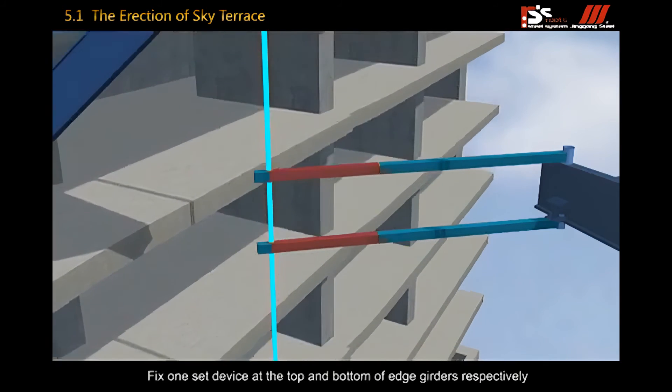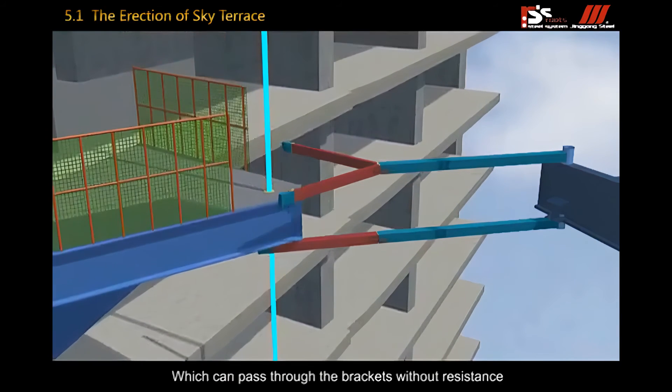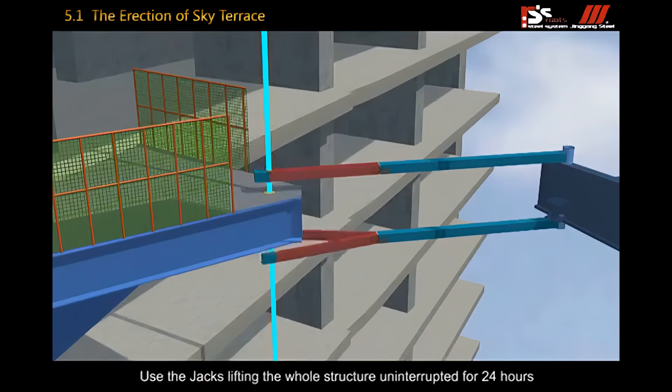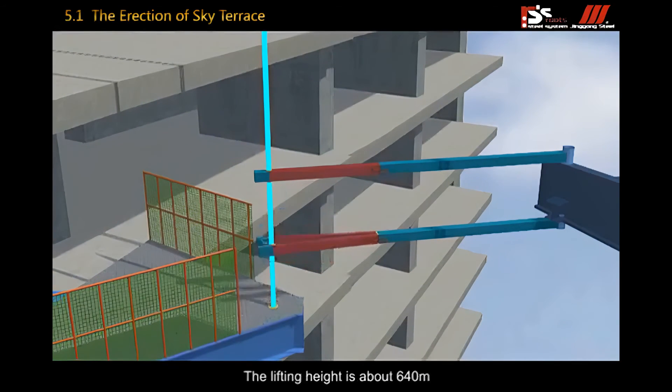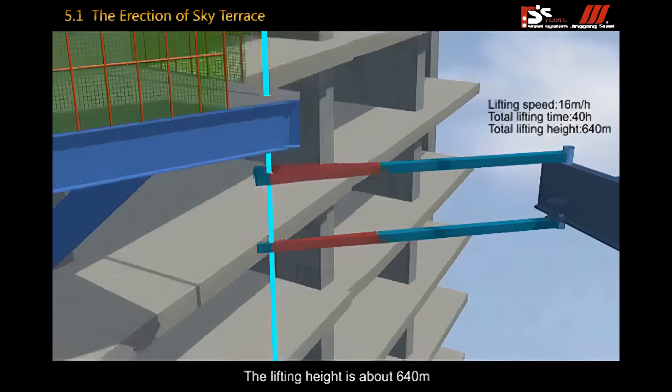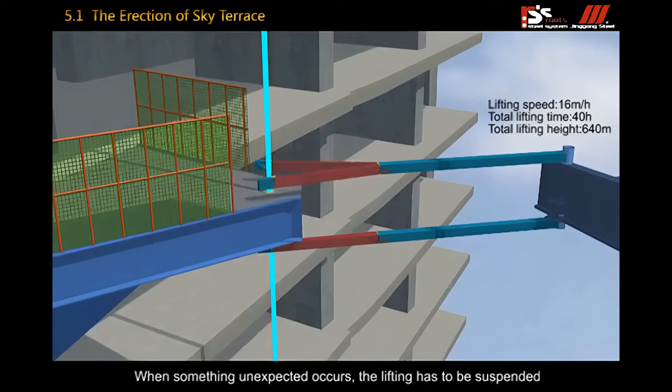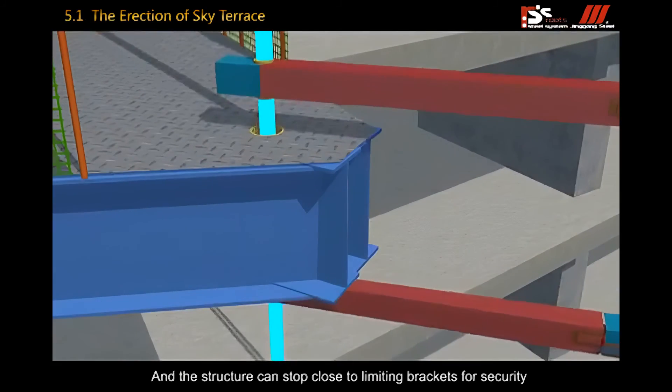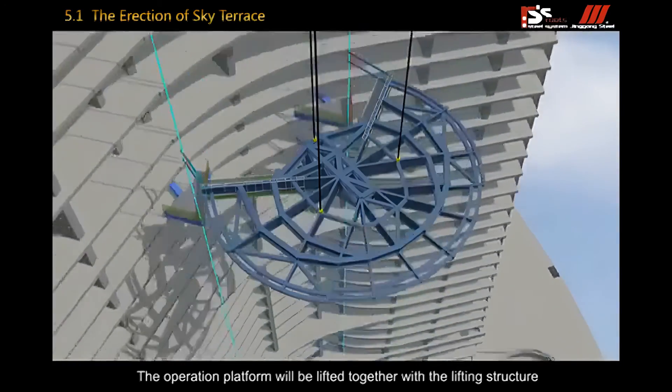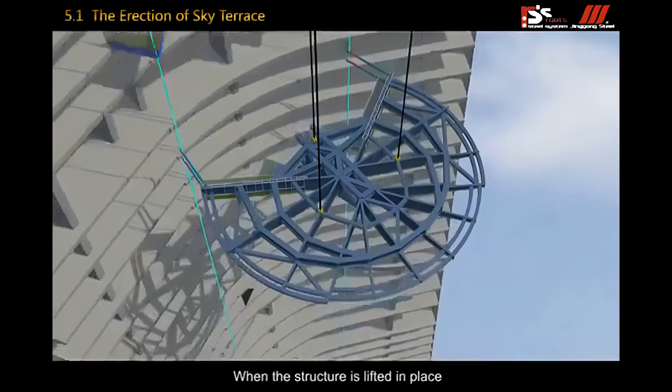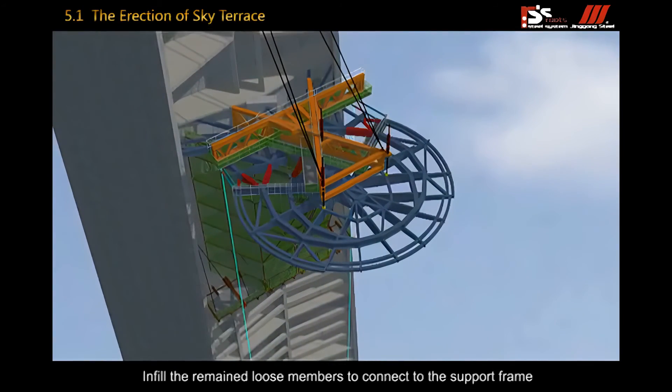Fix one set device at the top and bottom of edge girders respectively which can pass through the brackets without resistance. Use the jacks to lift the whole structure uninterrupted for 24 hours. The lifting height is above 640 meters. When something unexpected occurs, the lifting has to be suspended and the structure can stop close to limiting brackets for security. The operation platform will be lifted together with the lifting structure. When the structure is lifted in place, infill the remaining loose members to connect to the support frame.